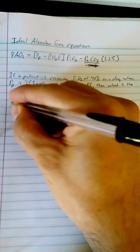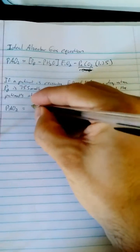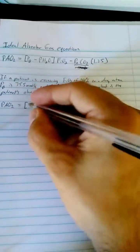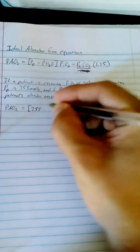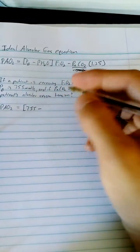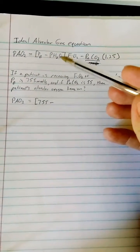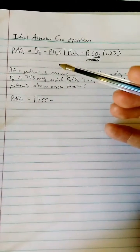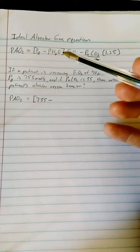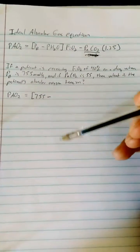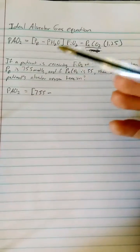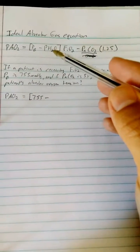PAO2 is equal to, so PB is going to be 755 minus, now we didn't reference the pressure of water vapor, which is the vapor that the air picks up as it travels through your upper airways, down your trachea, through the bronchioles, down basically to the alveoli.